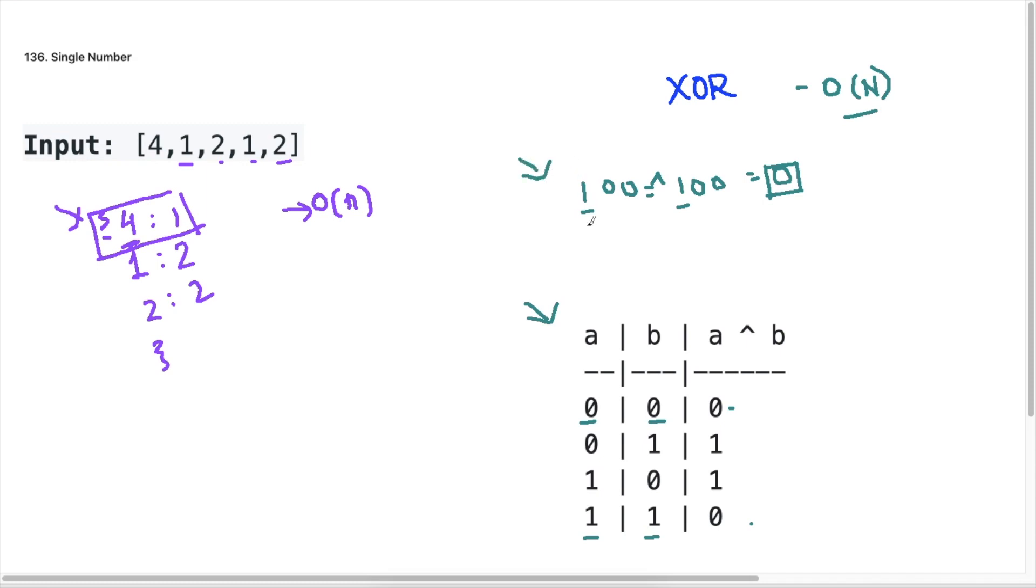So if we look here and if I take an XOR of any number with itself, if I take let's say 100 and 100. So this is binary for 4, right? So it will be 2 to the power 0 and then 2 to the power 1 and then 2 to the power 2, which gives us 4 here.